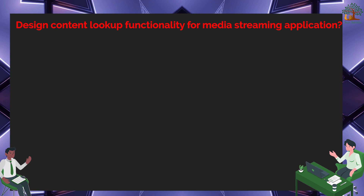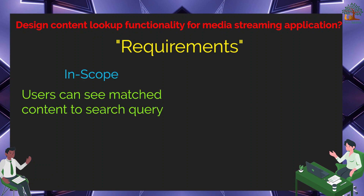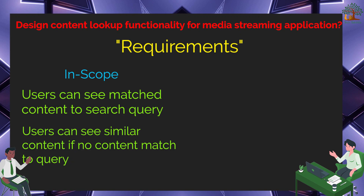So let's start with the most basic obvious requirement: users should be able to see matched content based on their search query string. Next, we should show titles that users will like in case the query does not match any content in our backend. There could be an edge case — Netflix's catalog can be regionalized, so a movie title available in the US might not be available in India. Let's filter out results if something is not available in a particular region.